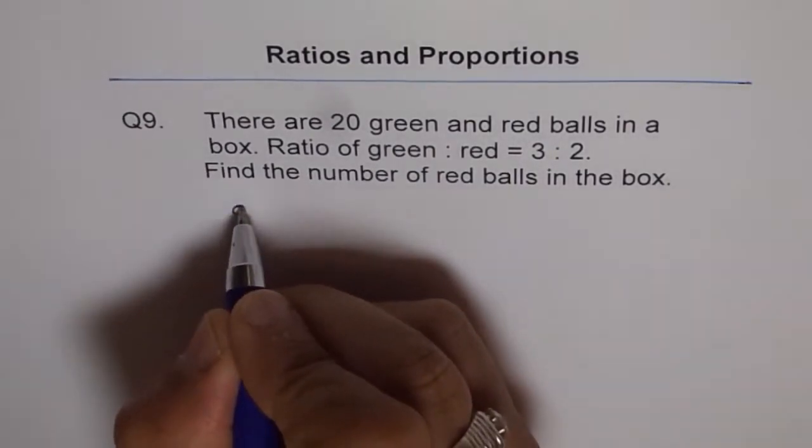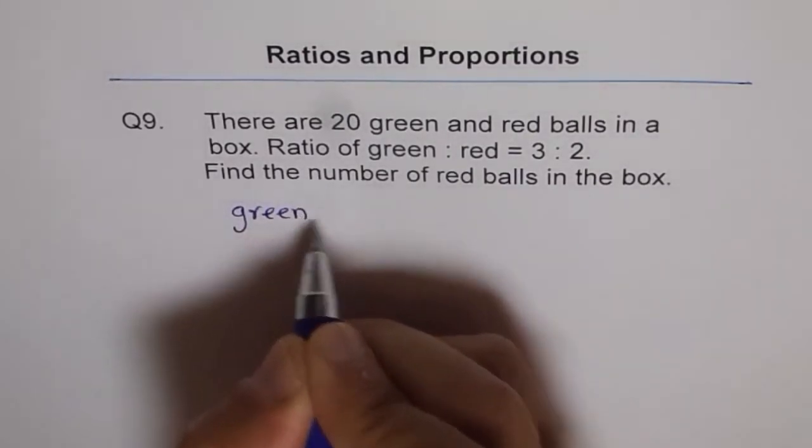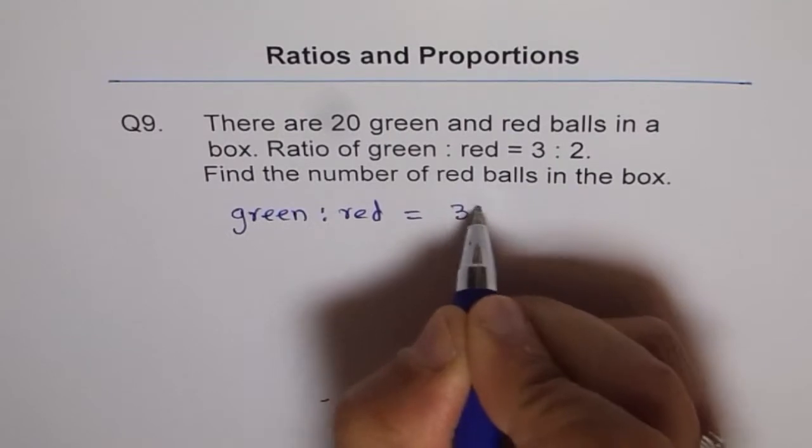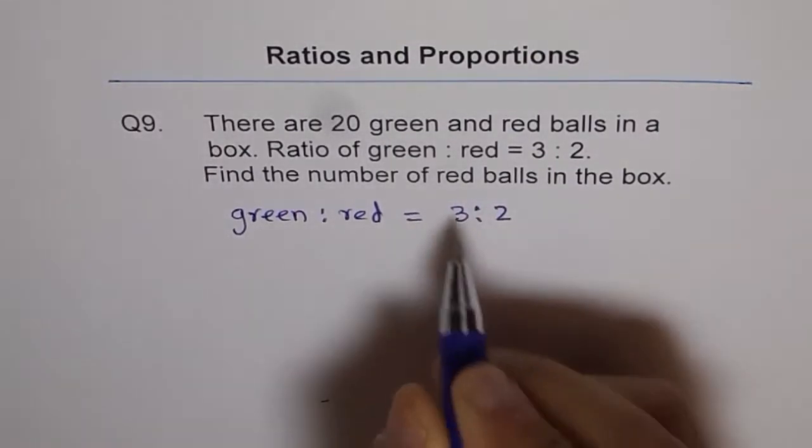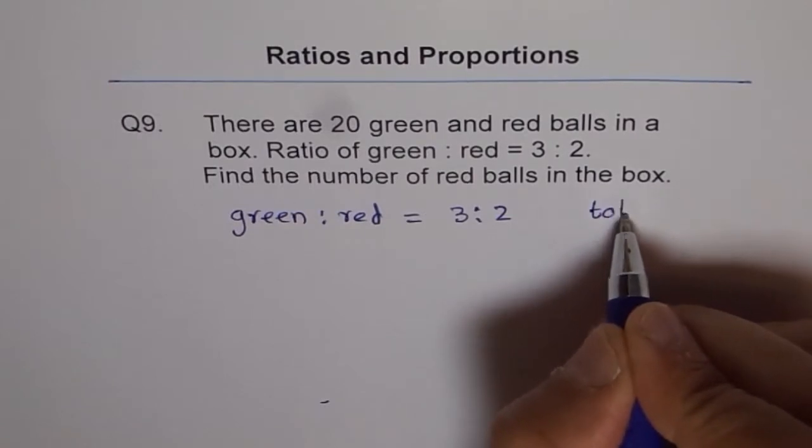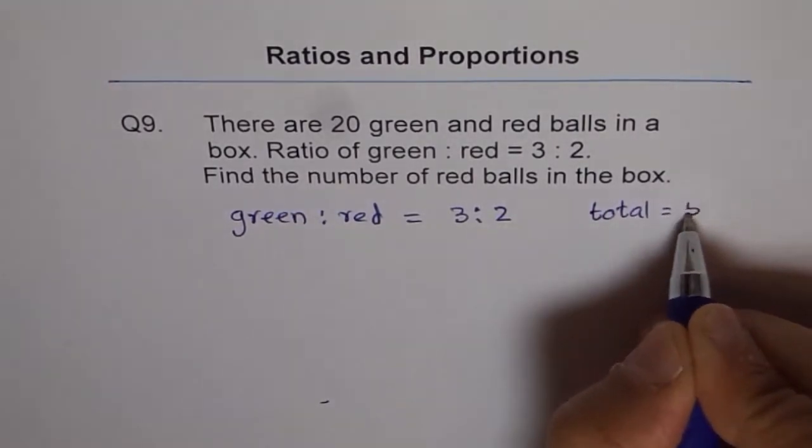So we are given green to red balls equals 3 is to 2. When you add them you get total of 5. So total is 5 for us.